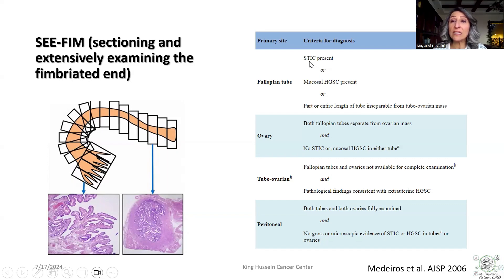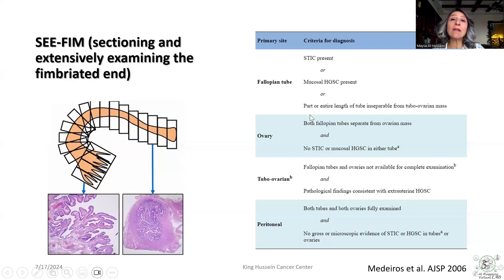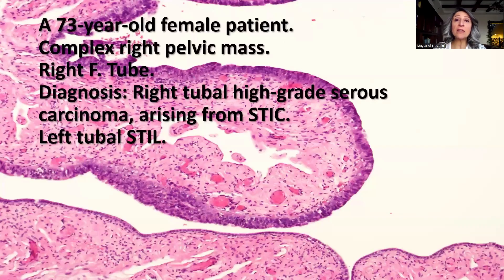Once we have evidence of STIC involvement of the Fallopian tube, or a mucosal high-grade serous carcinoma as in this case, or if part or the entire length of the Fallopian tube is inseparable from the tubo-ovarian mass, the origin of the tumor should be assigned as the Fallopian tube rather than ovarian, peritoneal, or tubo-ovarian.